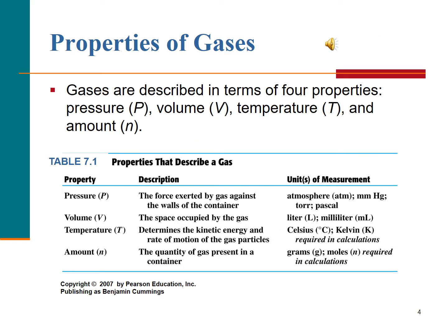A quick review: in addition to using pressure to describe the properties of a gas, we also use its volume, its temperature, and its amount. We use the lowercase letter N to represent the amount of a gas. We nearly always use moles to represent the amount of a gas. So we use the number of moles, the temperature, the volume, and the pressure to describe the gas.